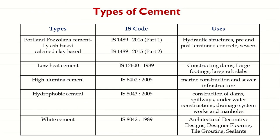Next is Portland Pozzolona Cement (PPC). It is prepared by grinding pozzolanic clinker with Portland cement — along with clinker powder and gypsum, a pozzolanic material such as fly ash, calcined clay, or GGBS is added. The IS codes are IS 1489:2015 Part 1 (fly ash based) and Part 2 (calcined clay based).